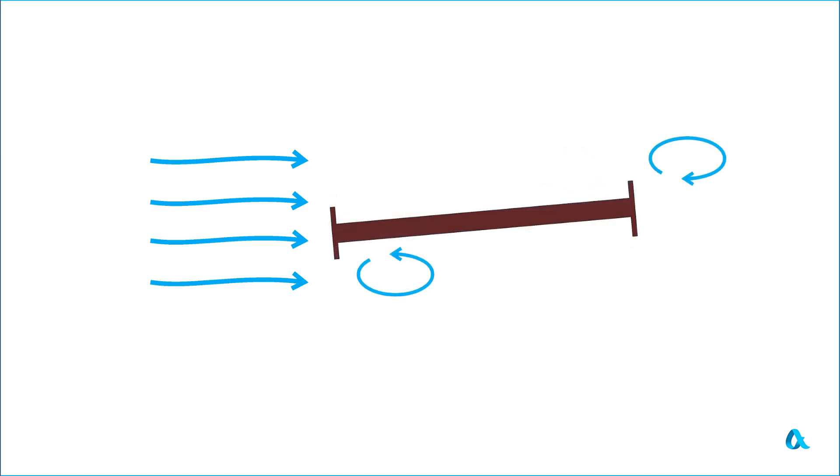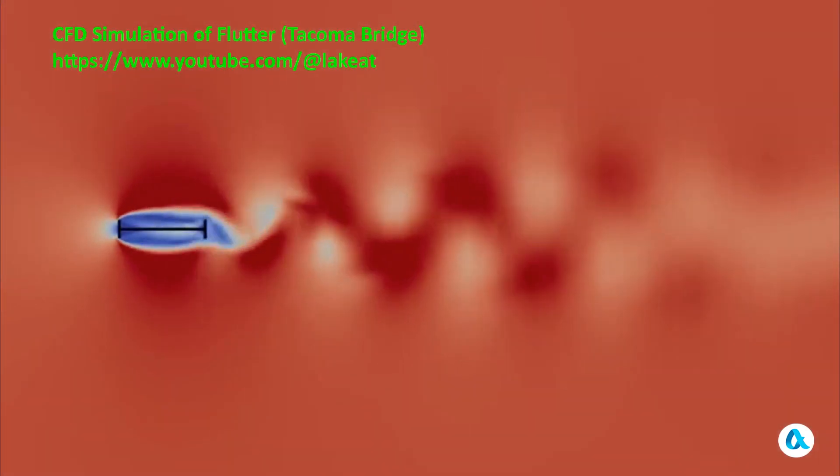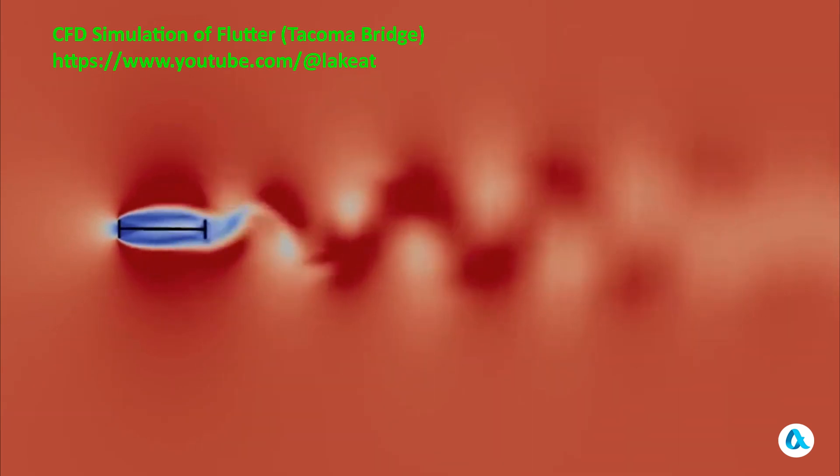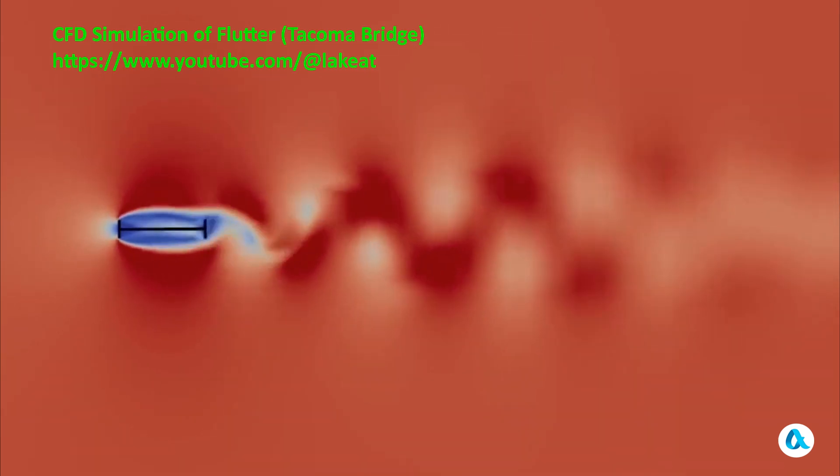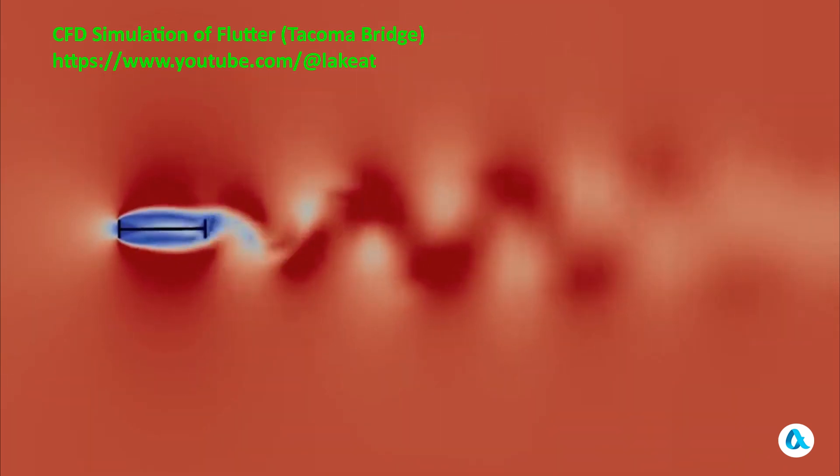After that point in time, a vortex forms under the leading edge of the deck and the cycle repeats. We can see how the aeroelastic torsional oscillations of the bridge occur in this very detailed and comprehensive simulation.